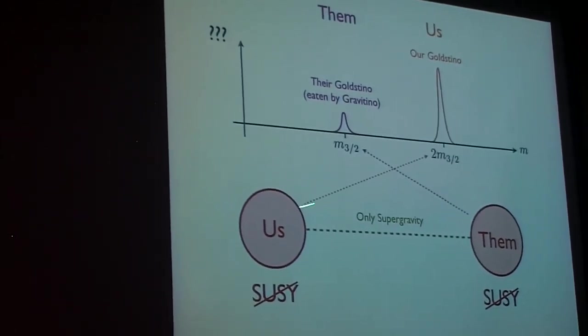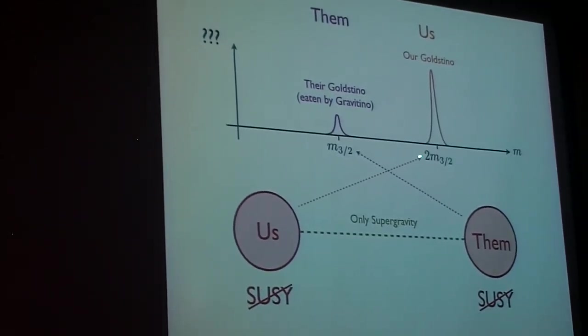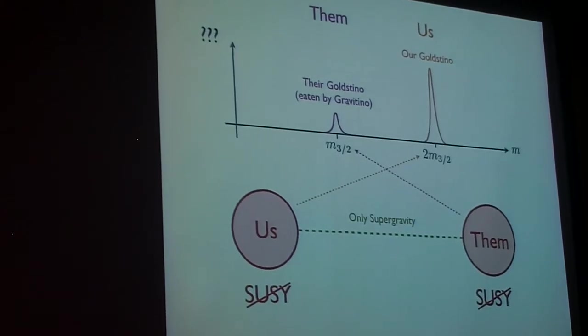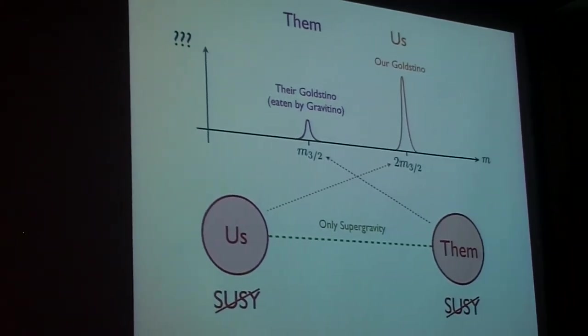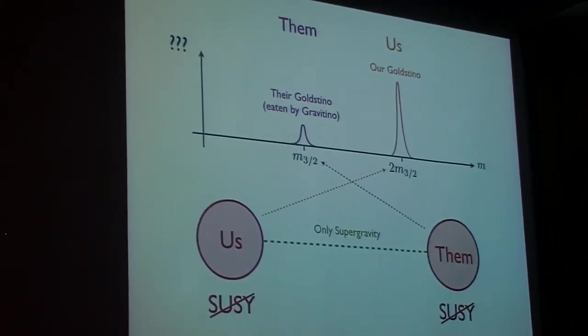Some observable that would correspond to our Goldstino being exactly twice that mass, some measurement that would probe that there's actually two Goldstinos in the universe, one which is uneaten and the other one which is eaten.